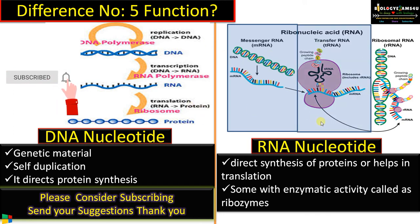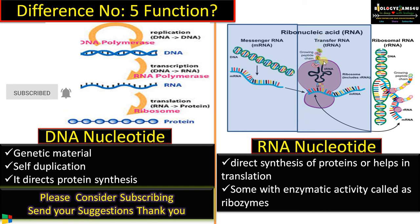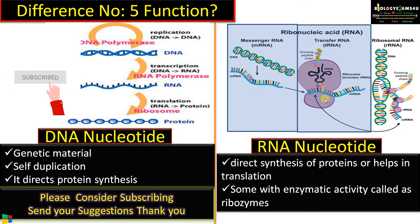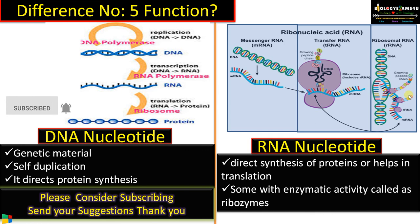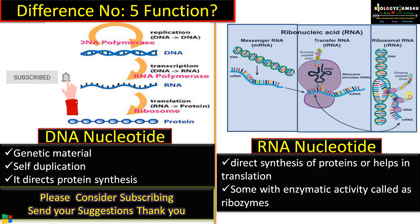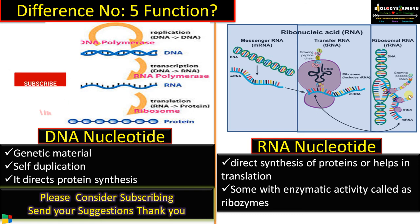tRNA acts as an adapter molecule, with amino acids at one end, specifically binding to the codon of mRNA, thus assigning the amino acids in polypeptide formation. Ribosomal RNA forms the ribosomes, which are involved in translation or protein synthesis. Some RNAs have catalytic activity and are called ribozymes, such as peptidyl transferase and spliceosomes.